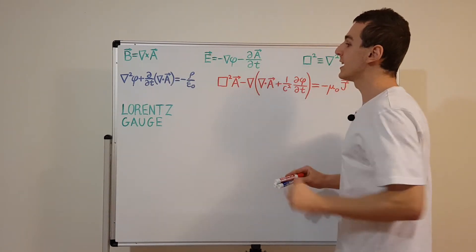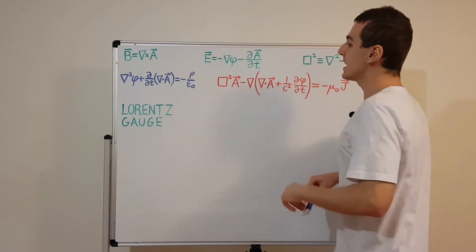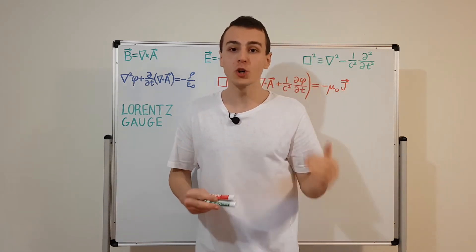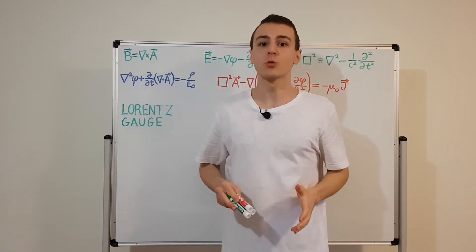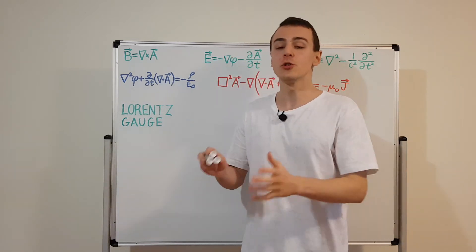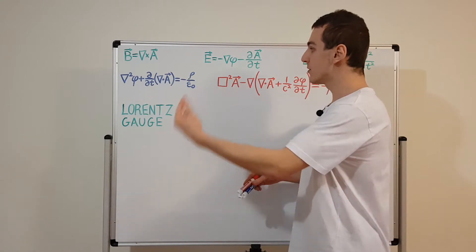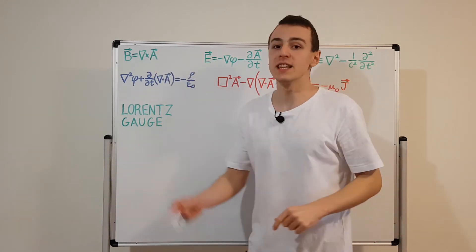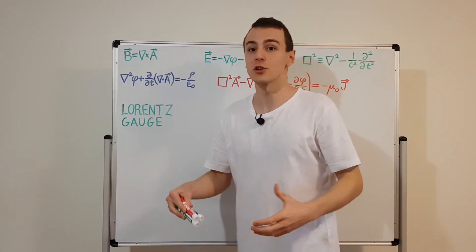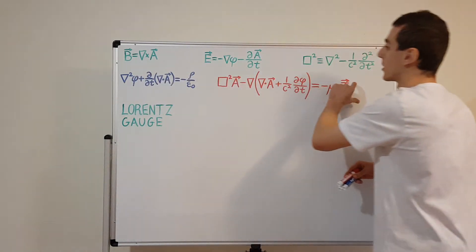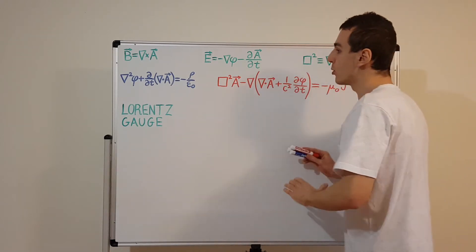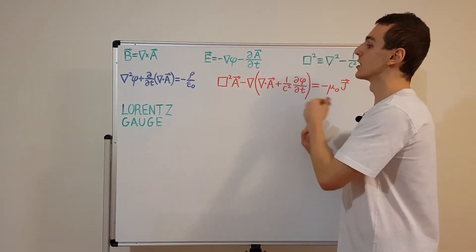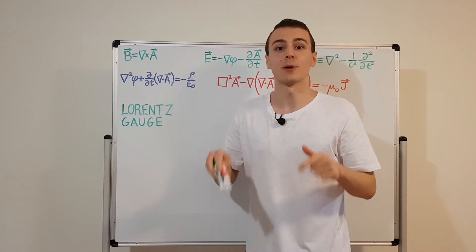Now let's have a look at the blue and the red equations. These two equations contain all of the information in the four Maxwell's equations. Two of Maxwell's equations are homogeneous — they have no source terms — and two are inhomogeneous, meaning they do have source terms. We used the two homogeneous equations to derive the first two expressions, and then we used the inhomogeneous equations to derive the other two expressions. The source terms appear on the right hand side.